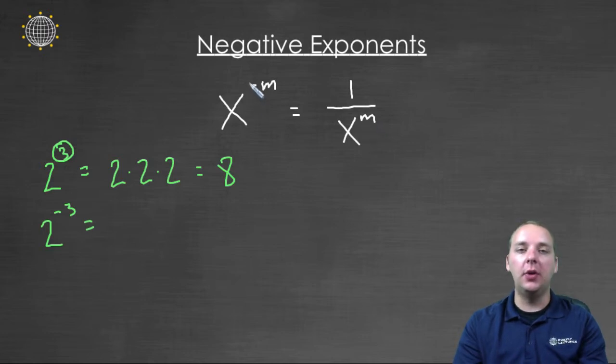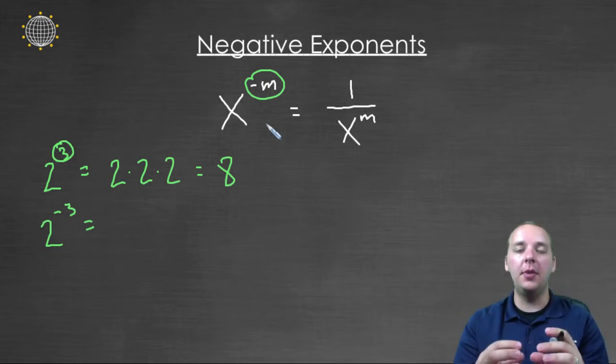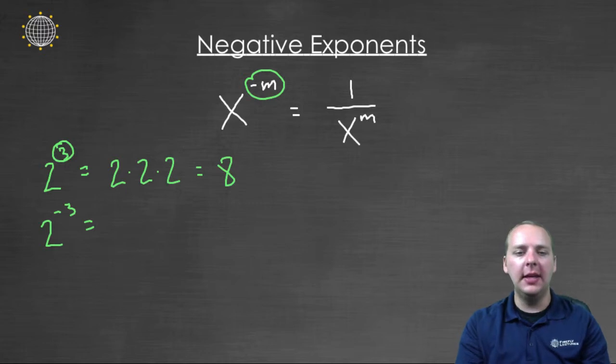So what happens when you have a negative exponent like this? Your whole term moves to the denominator, and then you have a positive exponent. And then even though I didn't write it, the opposite is also true.